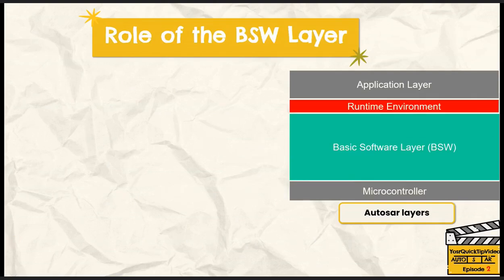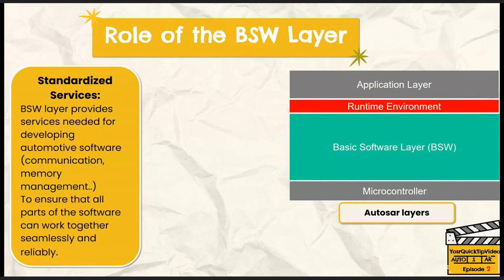To understand the basic software layer in a simple way, try to imagine it as the foundation of a house. Just like a strong foundation supports everything above it, the basic software layer supports the entire software stack in a vehicle. Let's start with the first role of this layer, which is to provide standardized services. Think of the basic software layer as the utilities in our houses, like water, electricity, and internet, which are standardized services that we need to live comfortably.